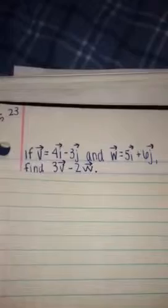If vector v equals 4 vector i minus 3 vector j and vector w equals 5 vector i plus 6 vector j, find 3 vector v minus 2 vector w.